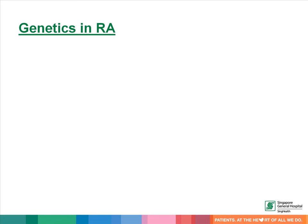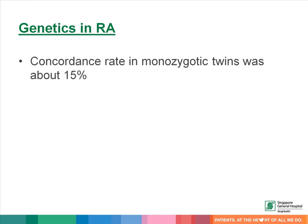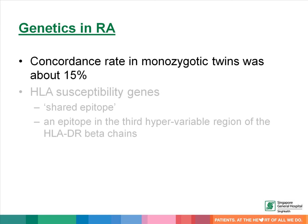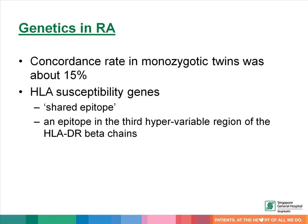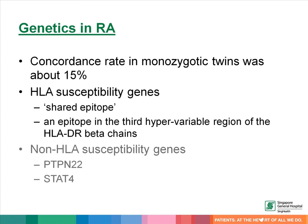Genetic factors are important in rheumatoid arthritis. However, the concordance rate in monozygotic twins was only about 15%, suggesting environmental factors play a critical role too. The strongest link between a gene and rheumatoid arthritis is the association of the disease with an epitope in the third hypervariable region of the HLA-DR beta chains, known as the shared epitope. However, there are now over 100 different gene polymorphisms associated with rheumatoid arthritis, which include some non-HLA genes as well.